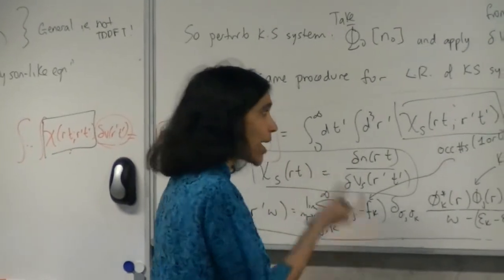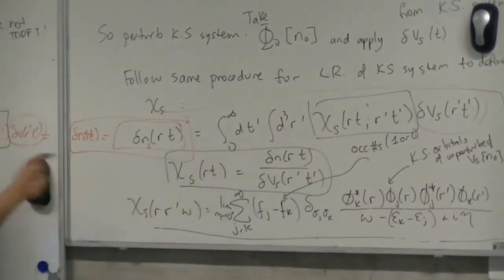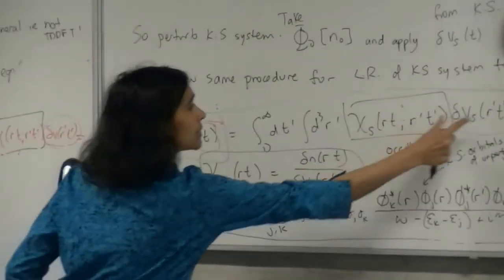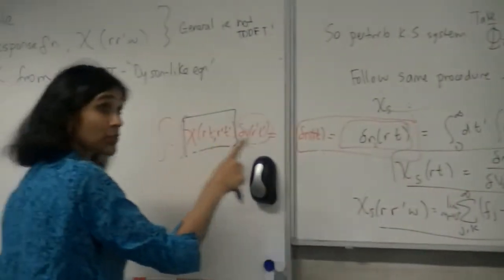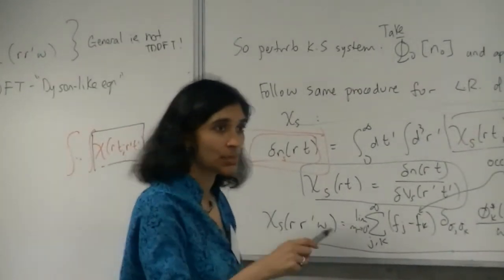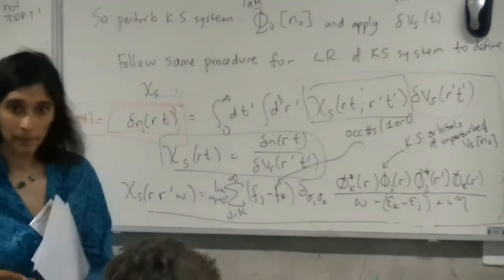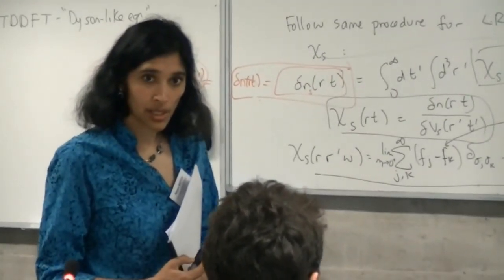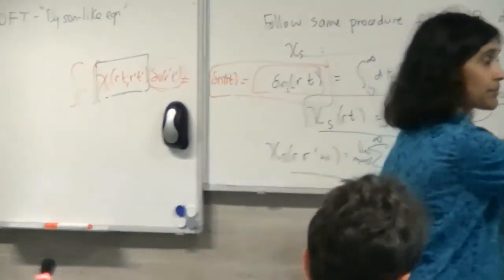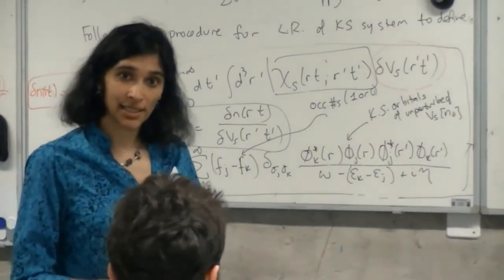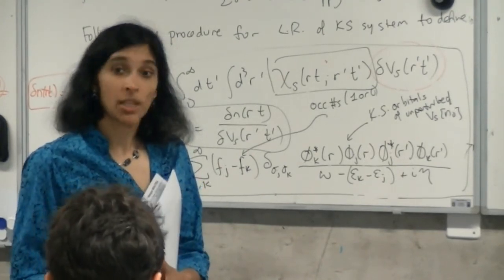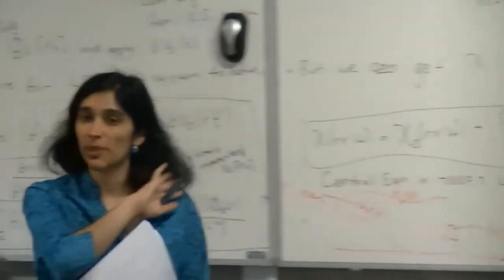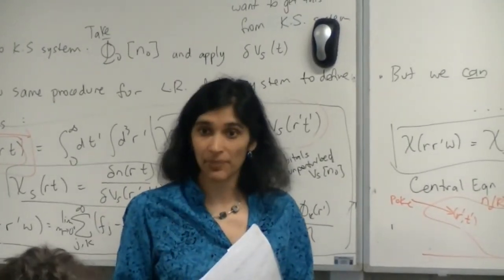If I have this exact kernel, this procedure will give me the exact response function chi to linear order. The kernel essentially mixes up all the different Kohn-Sham excitations and takes linear combinations in such a way that you get true excitations — it shifts the poles from single Kohn-Sham excitations to the true many-body excitation energies. This is conceptually how TDDFT works.